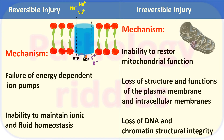The mechanism of reversible injury involves failure of the energy-dependent ion pump. There is an ion pump which utilizes ATP to maintain ionic balance between the outside and the inside of the cell.